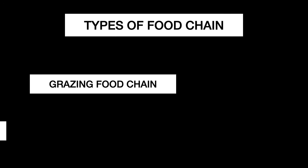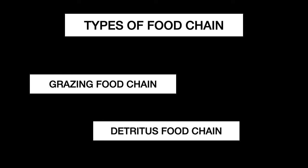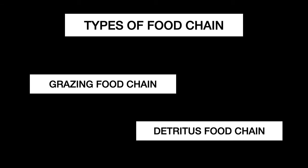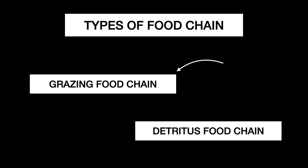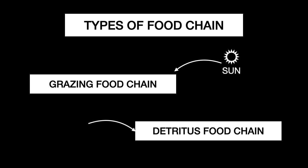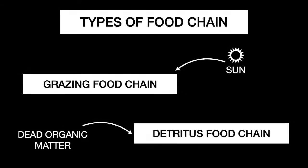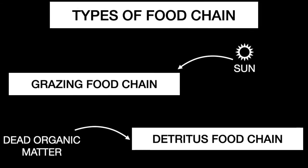Now let's look at the types of food chain. There are two types: the grazing food chain and the detritus food chain. The grazing food chain derives its energy directly from the Sun. The detritus food chain begins with dead organic matter, which is an important source of energy.